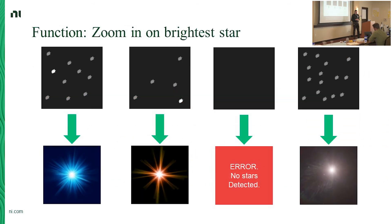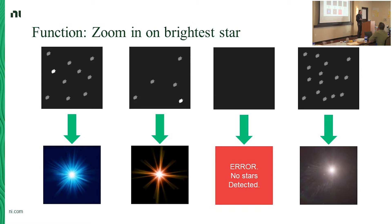Next function: 'zoom in on brightest star' takes an image and returns either an image or an error. Case 1: found the star, zoomed in, it's pretty. Case 2: found a red star going the other direction — great. Case 3: error 'no stars detected.' Is that reasonable? Actually, it shouldn't have returned an error — it could have just returned a black image. Returning a black image for 'brightest star' would have been legitimate.